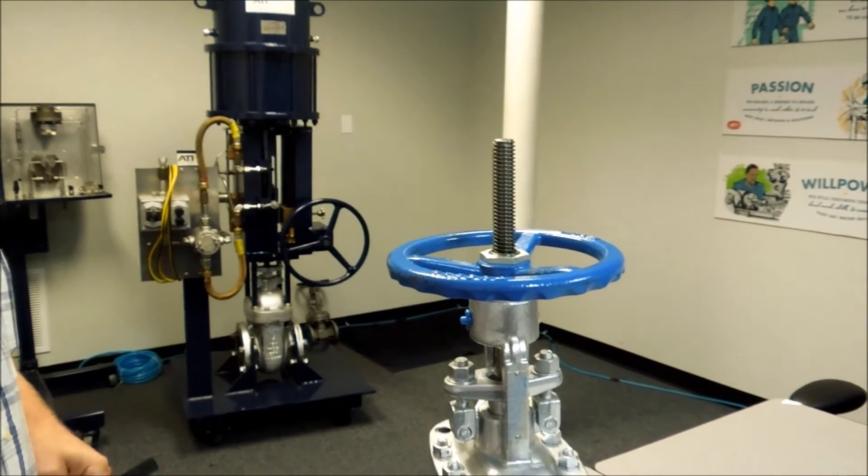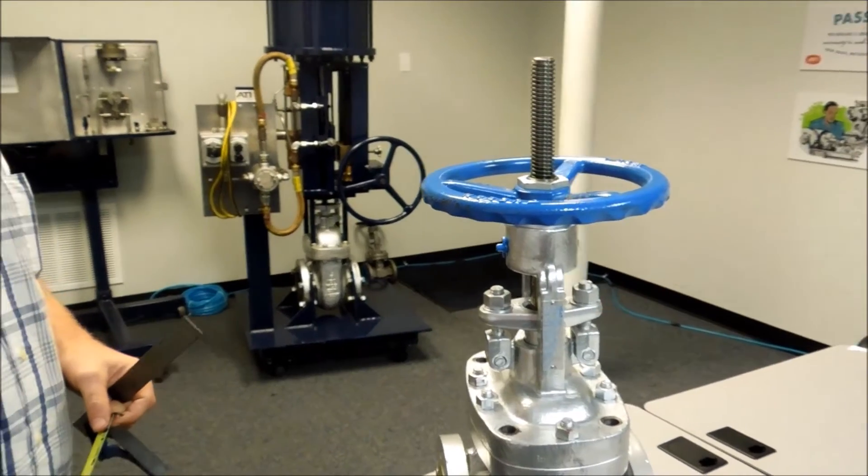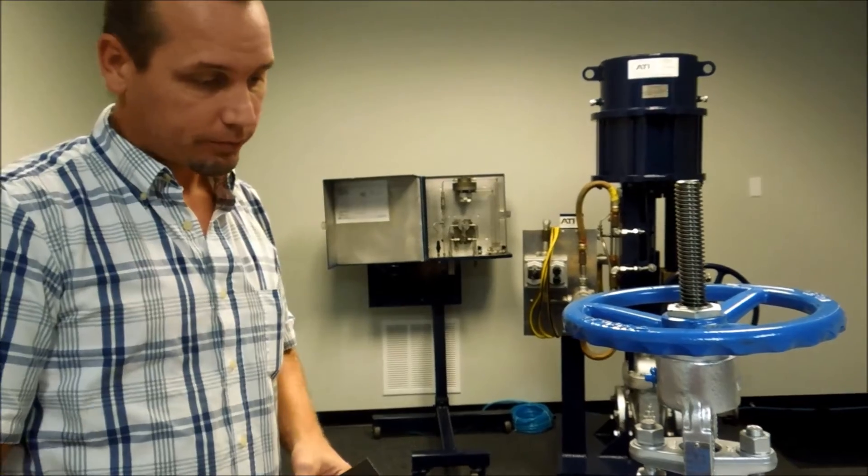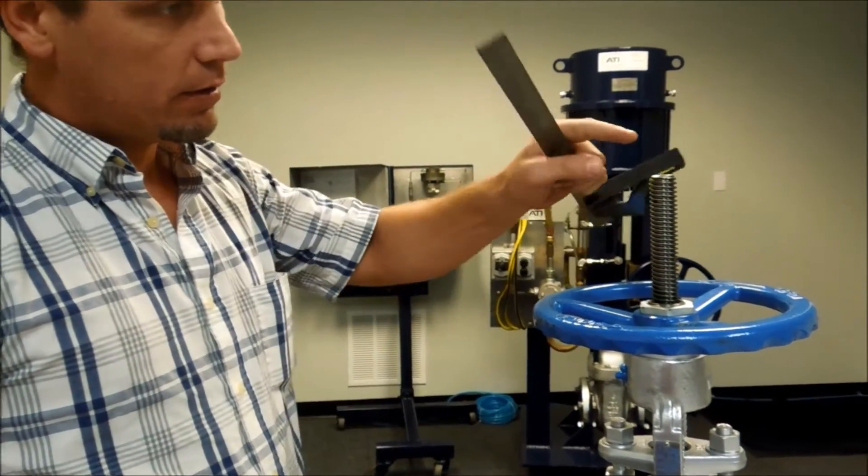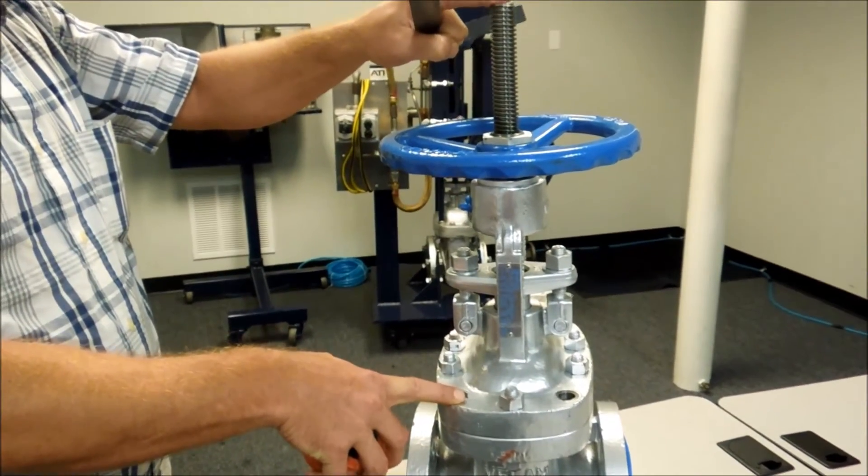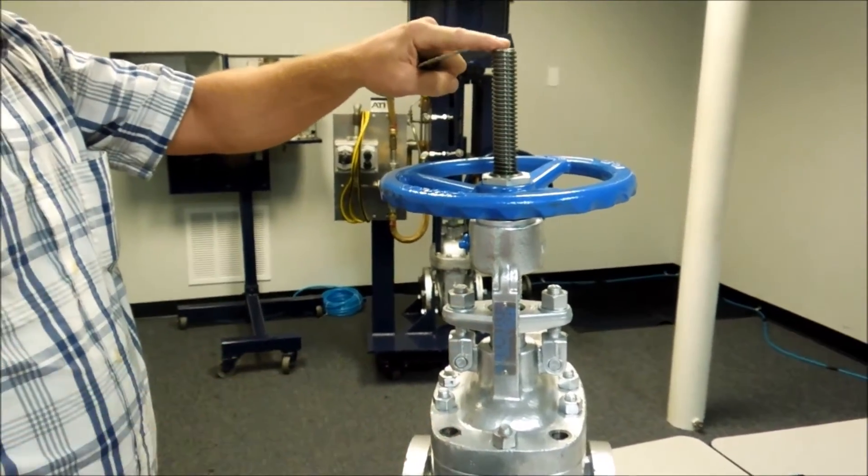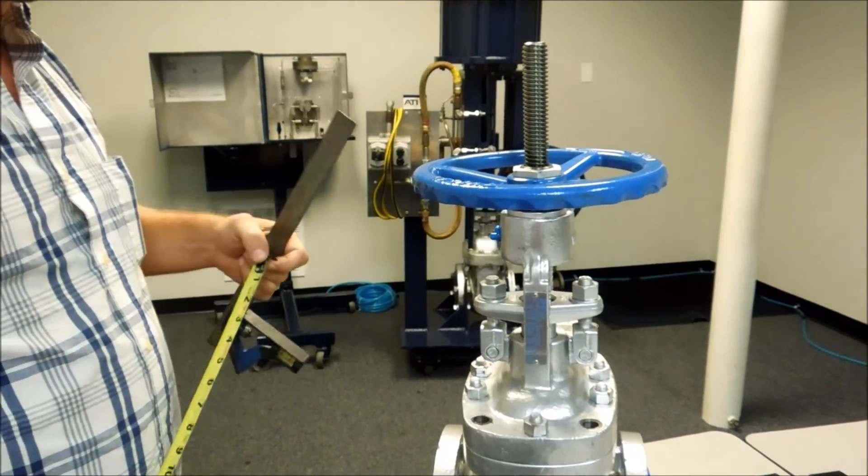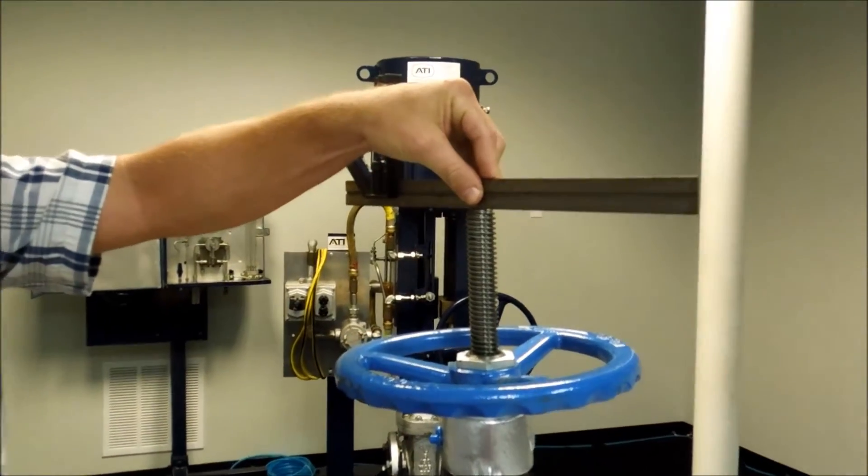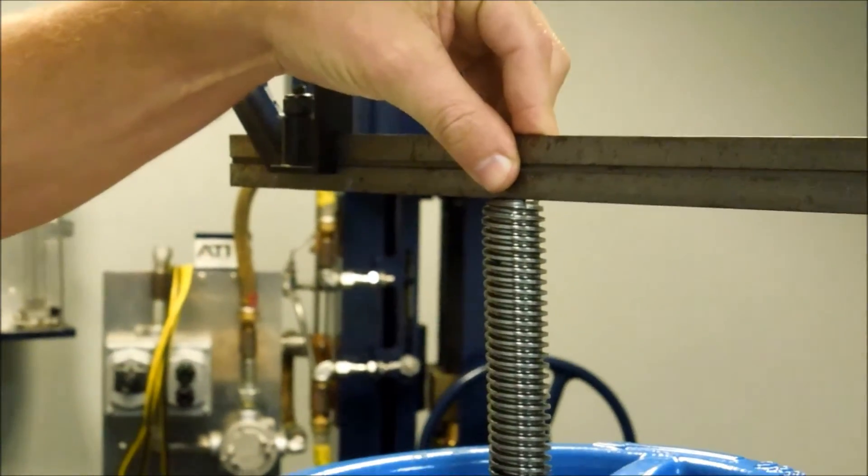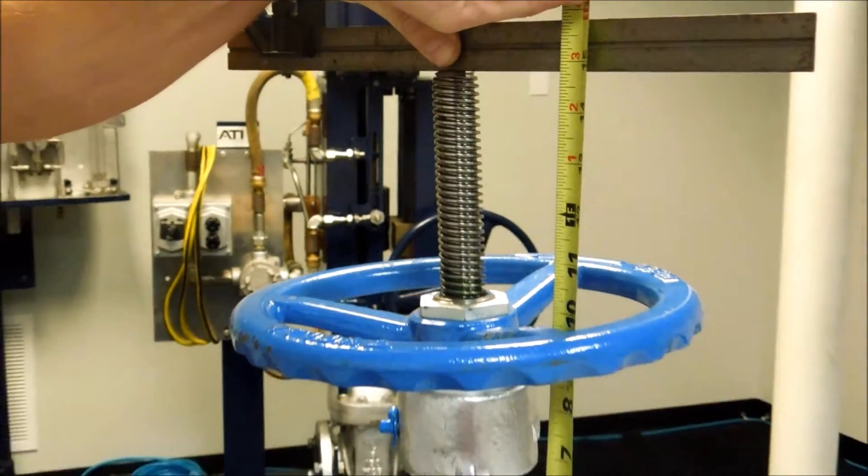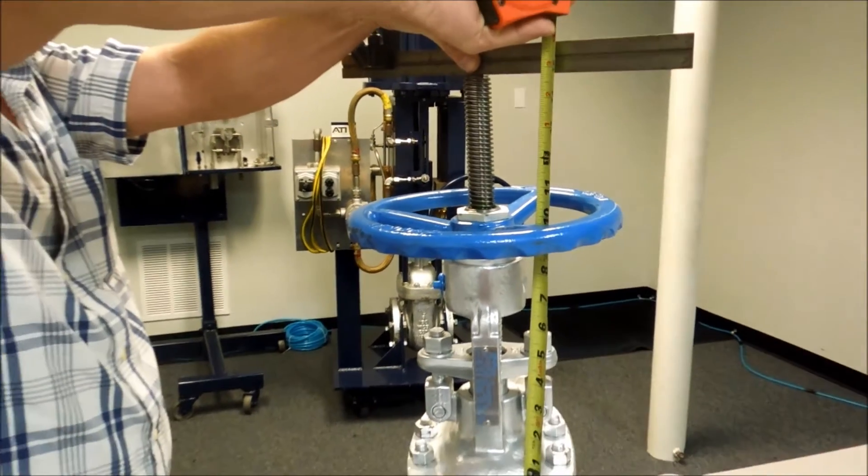This gate valve is in the open position and we have to obtain the open stem height starting from here to this surface. From this surface to this surface. The way we do that is we will normally take a scale and set it on the top surface, take a measuring tape and run it down to the bonnet surface and take a measurement.